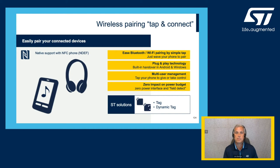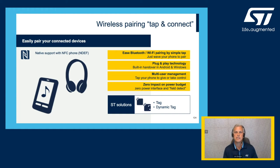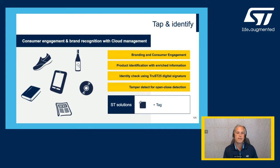Maybe you've seen a Bluetooth-enabled speaker with an NFC tag. Imagine you're at a park or the beach and someone's playing music — you could just tap your phone on that speaker without going through a complicated pairing procedure, take over the speaker, and play your song. This isn't just for Bluetooth; you can use NFC to exchange credentials for Ethernet, Zigbee, LoRa, or pretty much any connectivity situation.